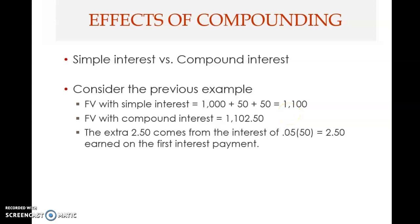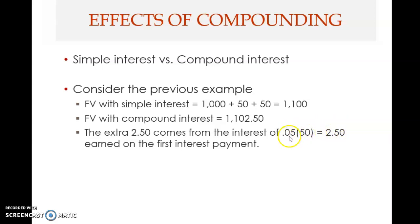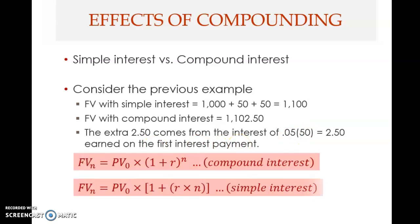With simple interest you get one thousand one hundred, but with compound interest we computed one thousand one hundred and two dollars and fifty cents. The difference is two dollars and fifty cents. This two dollars and fifty cents comes from earning five percent interest on the fifty dollars of interest earned in the first year — that is what is meant by interest on interest, which is compound interest.